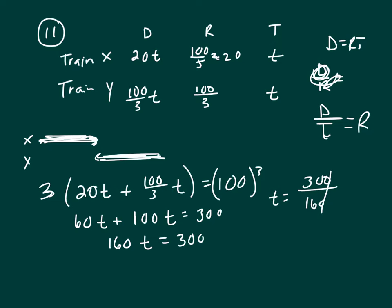Divide by 10, you're left with 30 over 16, and 30 over 16 is 15 over 8.